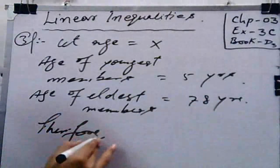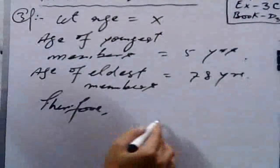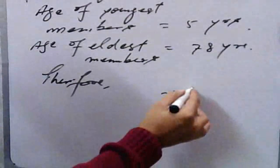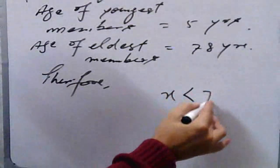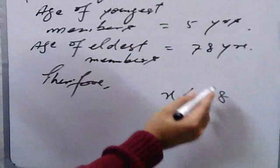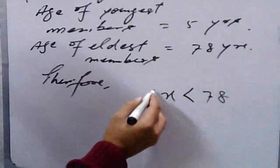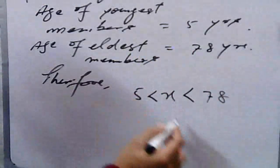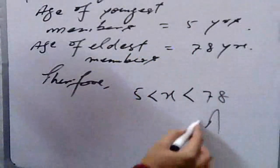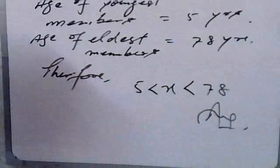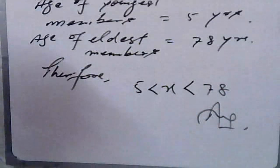Therefore, it can be written as: x is less than 78 but it is greater than 5 years. So x is greater than 5 years. That is your required result.